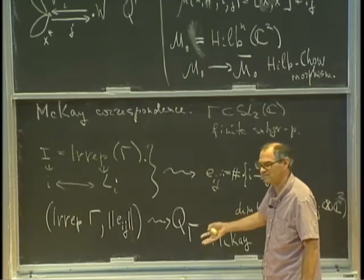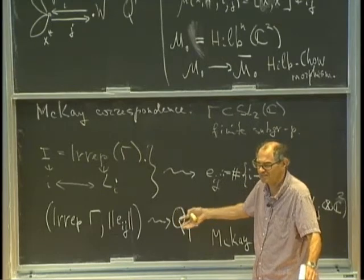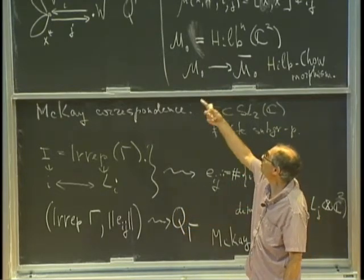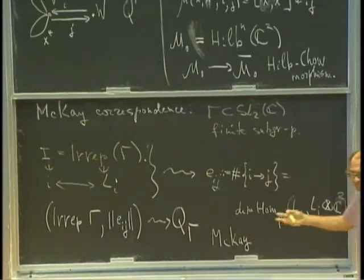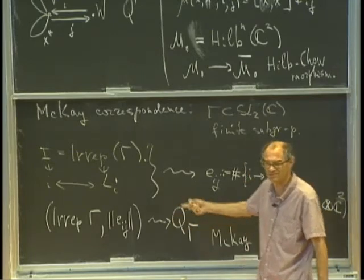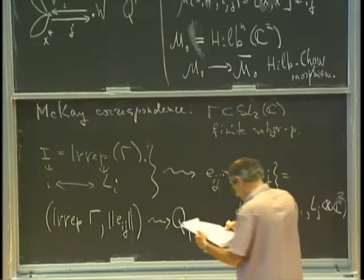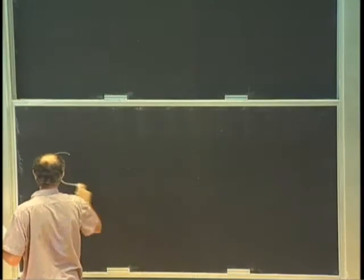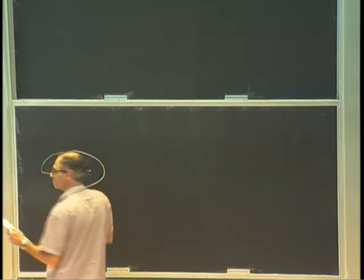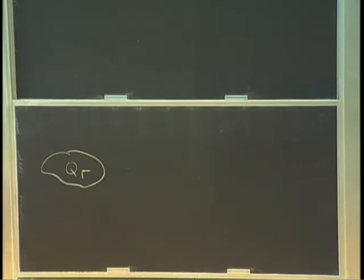This Q gamma is supposed to play the role of Q bar. Now we're supposed to put the prime on top of all this — that is, add new vertices. But I will only be interested in a very special case: among the vertices of Q gamma, there is a distinguished one corresponding to the trivial representation, usually denoted by naught. The whole point of the McKay correspondence is to observe that the graphs which show up are precisely the affine Dynkin graphs.